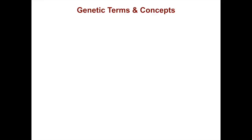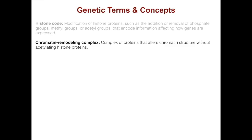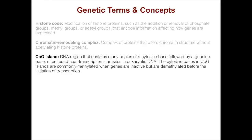Today I've given you a brief survey of gene regulation in eukaryotes. Here are some genetic terms and concepts to remember. The histone code refers to modification of histone proteins — such as the addition or removal of phosphate groups, methyl groups, or acetyl groups — that encode information affecting how genes are expressed. A chromatin remodeling complex is a complex of proteins that alters chromatin structure without acetylating histone proteins. A CpG island is a DNA region containing many copies of a cytosine base followed by a guanine base, often found near transcription start sites. The cytosine bases in CpG islands are commonly methylated when genes are inactive, but are demethylated before the initiation of transcription.